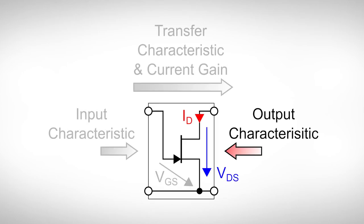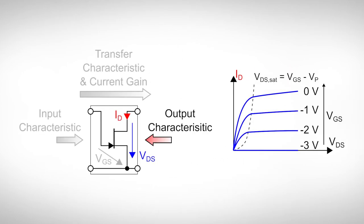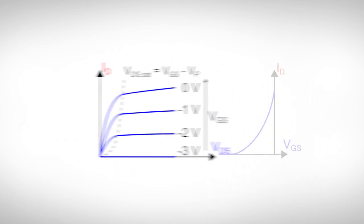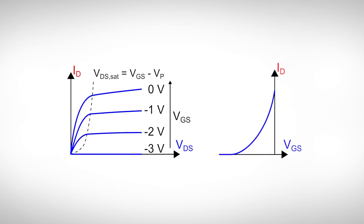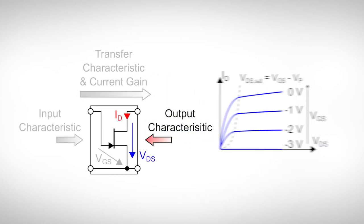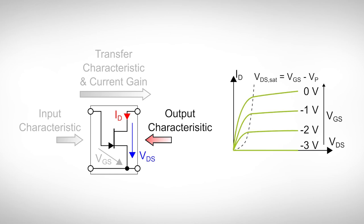The output characteristic shows how the drain current is influenced by the drain source voltage. And we also know that the drain current is a strong function of the gate source voltage, as we have just seen in the transfer characteristic. Similar to the bipolar transistor, there are actually infinitely many output characteristics. Which one is active is determined by the gate source voltage. To represent these different characteristics, a couple of selected lines are drawn into the output characteristic at once. If we apply a certain gate source voltage, we simply select one of these lines.